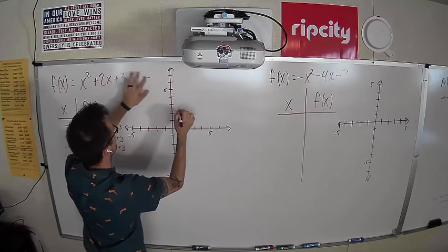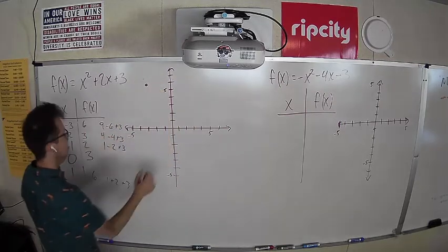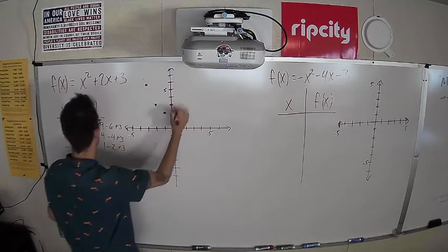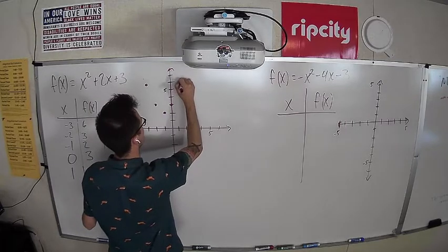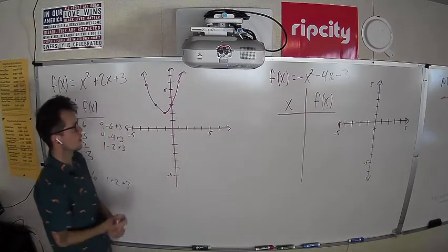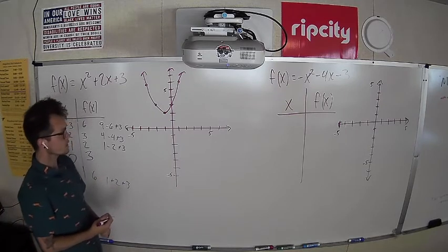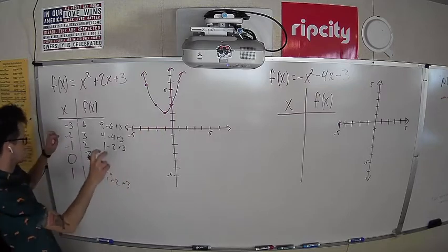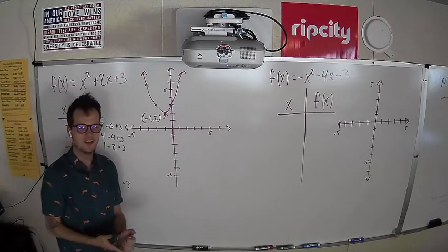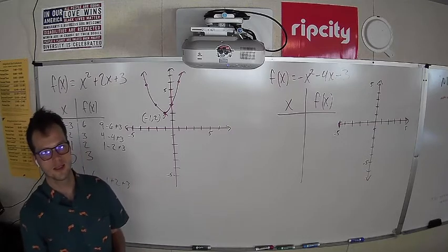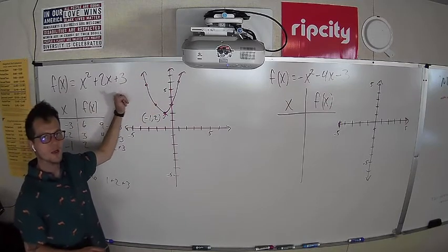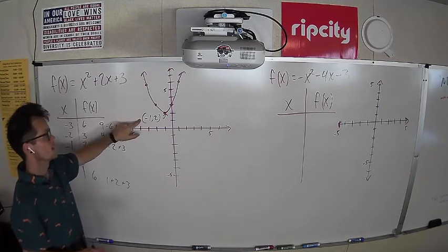Oops, I labeled this incorrectly — let me fix that. When we connect the dots, we have created our U-shape, our smiley face, and this one happens to open upwards. That turnaround point at (-1, 2) has a special math name — we call it the vertex. Every quadratic is going to have one because every quadratic, when you graph it, has a shape that looks like this. We call that shape a parabola. So this is a parabola that opens upwards with a vertex of (-1, 2).